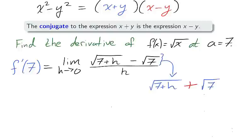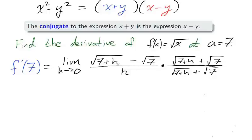We'll attack this limit by multiplying by the conjugate of the numerator. What is the conjugate of the numerator? We find the conjugate by flipping the middle sign, and we multiply by the conjugate divided by the conjugate, or 1.